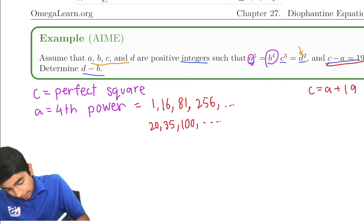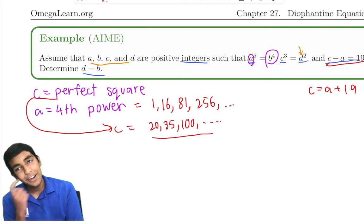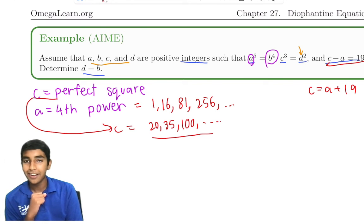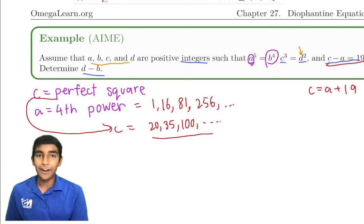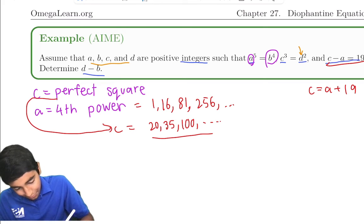And this c has to be a perfect square. Are any of these a perfect square? 100 looks a lot like a square, doesn't it? It's 10². So we found a possibility that works. c equals 100 and a equals 81.